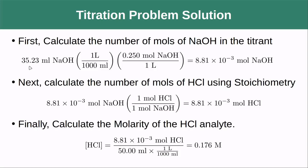First, we take the volume of NaOH — our known quantity — and multiply it by its concentration. We were told it was 0.250 M, which means 0.250 moles per liter, so 0.250 moles for every one liter. To get the moles of NaOH, I need to multiply by the volume in liters, including that unit conversion. When I do that all out, I see that I got 8.81 × 10⁻³ moles of sodium hydroxide.